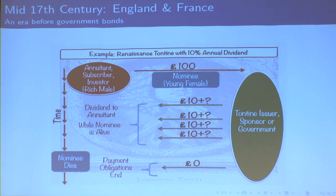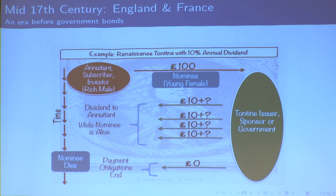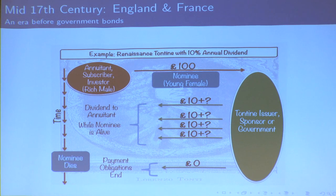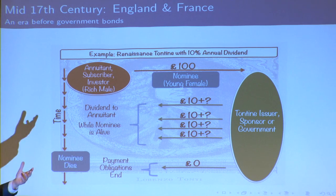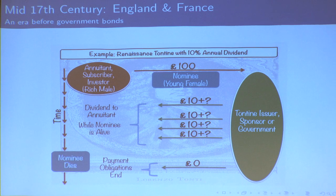So how does a tontine work? Think back to the 17th century. The governments in England or France need to borrow money, and the instrument they used was this: they issued a tontine loan. You had an investor who would hand the government — the tontine issuer, the sponsor — 100 pounds. The government guaranteed they would pay a coupon of 10 pounds or 10% per year as long as the nominee you selected was still alive. There are three parties: the annuitant, the investor putting up 100 pounds, and the government on the other side. Once your nominee dies, the payment obligation ends and you lose it all. So you want to pick a nominee that's going to live for a very long time, and in most cases people would pick young females.